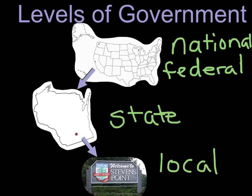So again, to review: when we're talking about levels of government, we've got the national or federal level — those are the big guys. One level smaller, one level lower, we're looking at the individual states — Wisconsin, Minnesota, Iowa, Alaska. And then we get down to the local level, and we're looking at city councils, county boards, and village boards — all those organizations that make laws at the small, local level.